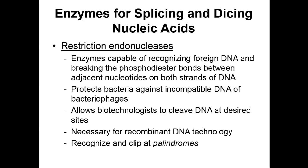We found that we can use restriction endonucleases for genetic engineering. These are the hammer in the biochemist's toolkit, or in the molecular biologist's toolbox, so to speak. These enzymes can recognize very specific spots of DNA and break the phosphodiester bonds that hold those DNA molecules together.